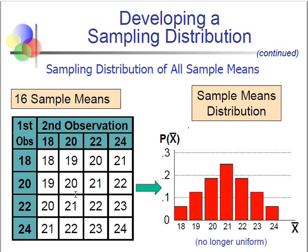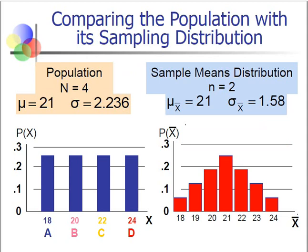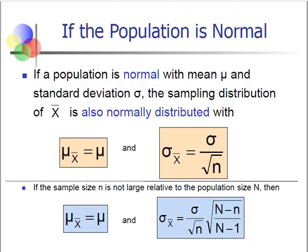For instance, if we wanted to know the probability of obtaining a mean of 20 in our previous example, how would we find that probability? To find the probability, we need to know the distribution of the sample means. Our first case is if the population is normal — then the sampling distribution of the sample means is also normally distributed.